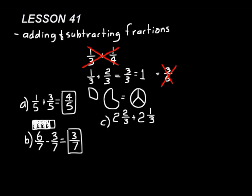Look at practice problem C. Now we have two mixed numbers that we're adding. Here's a hint: when you're adding or subtracting mixed numbers, do the whole number part separately from the fraction part. We have a two and a two to add together, so that's four. Then we have two-thirds and one-third to add together, which gives us three-thirds. We said that any time the numerator and denominator are the same, that equals one whole. So we're really doing four plus one, which is five. Two and two-thirds plus two and one-third equals five.